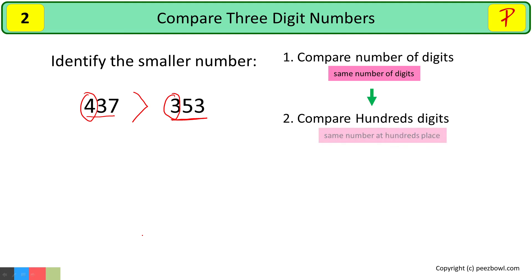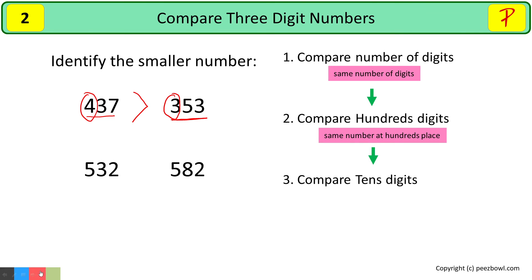Now consider if both the numbers have the same digits at the hundreds place. Then we compare their tens digits and decide which number is smaller. As in this example, we have 5 at the hundreds place in both the numbers. So we will compare their tens place value. As 3 is smaller than 8, so 532 is a smaller number than 582. I will place the smaller than symbol towards 532.